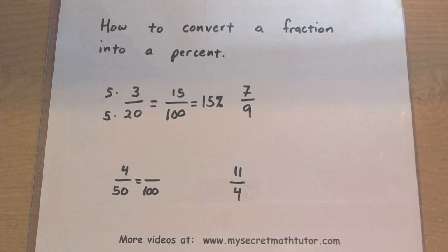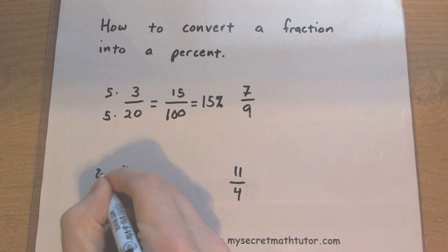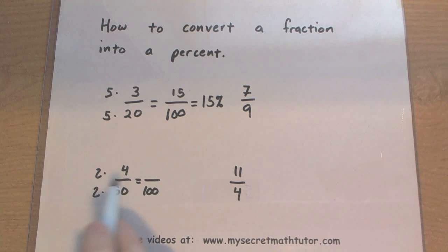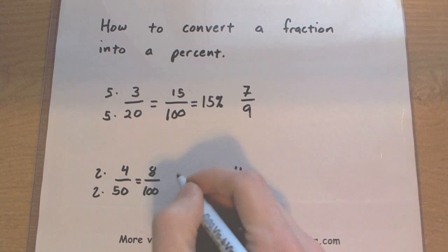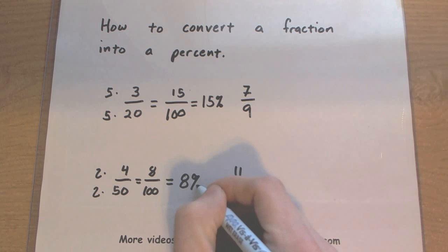So 2 on the bottom, 2 on the top. 2 times 4 is 8. So my new fraction is 8 out of 100. So this is the same as 8%.